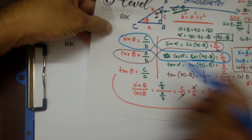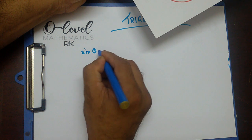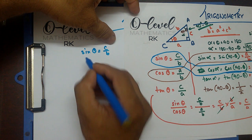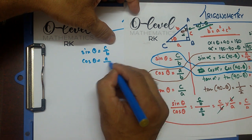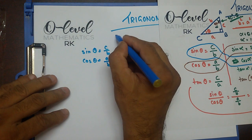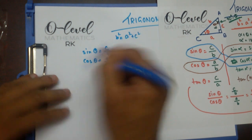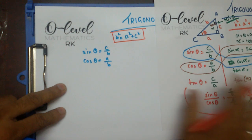We are going to take cos theta and sin theta. Sin theta equals c by b — you can see that sin theta equals c by b. Cos theta equals a by b. We are going to go from here, and then Pythagoras theorem: b squared equals a squared plus c squared. We are going to use this identity — that is Pythagoras theorem.